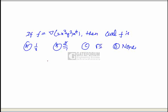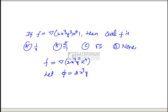In this problem, the given function is f equal to del(2x³y²z⁴). Let us consider the function as φ, which is 2x³y²z⁴ — a scalar function.